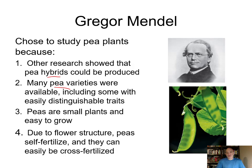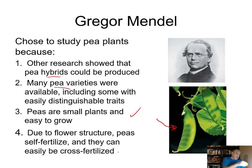Peas are easy to grow — they're in the bean family. The flower structure for peas allows self-fertilization because they have both male and female parts, making it a complete flower. They're also easy to cross-fertilize: you can get pollen from one plant and easily pollinate the flower of another. Plus they don't run away from you — they're in the garden.